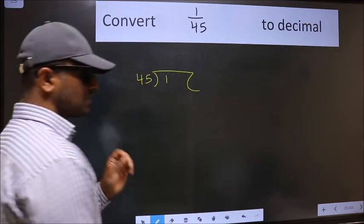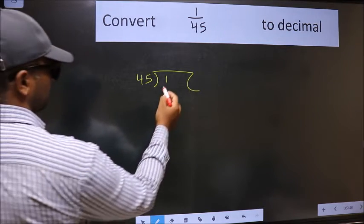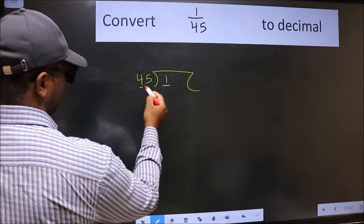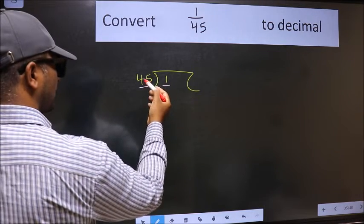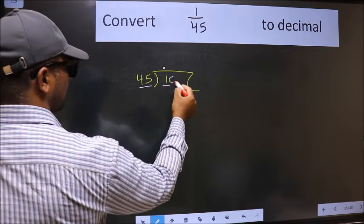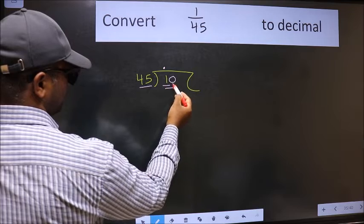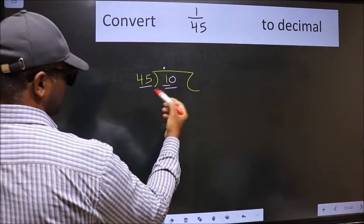This is your step 1. Next, here we have 1 and here 45. 1 is smaller than 45, so what we should do is we should put dot and take 0. So 10, 10 is still smaller than 45.